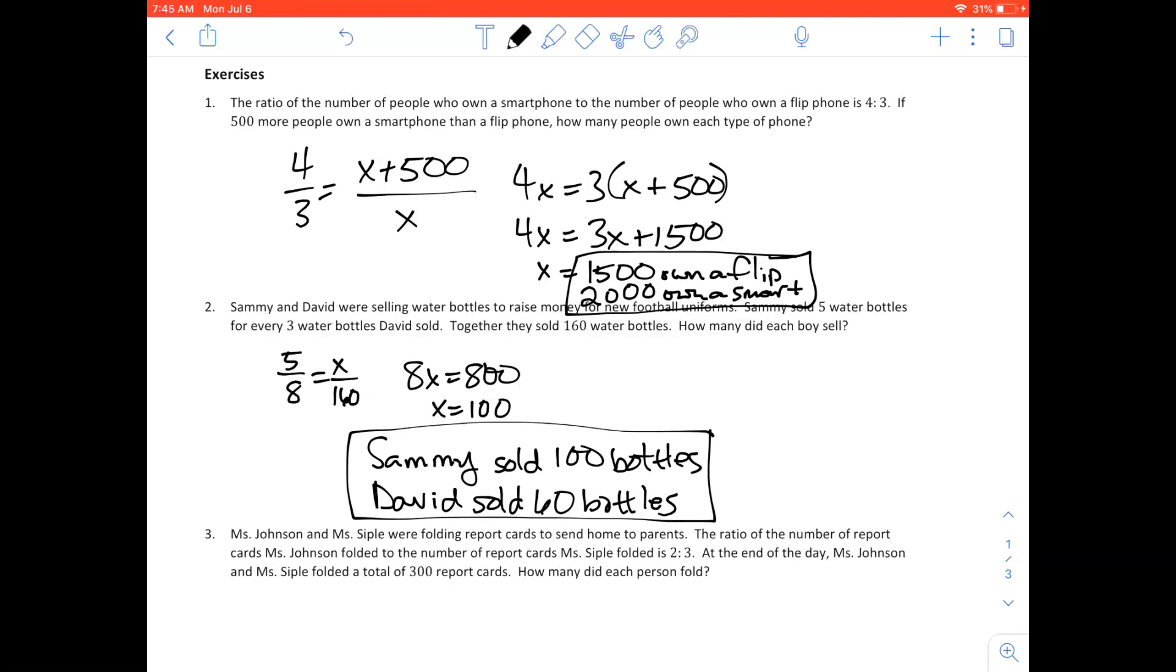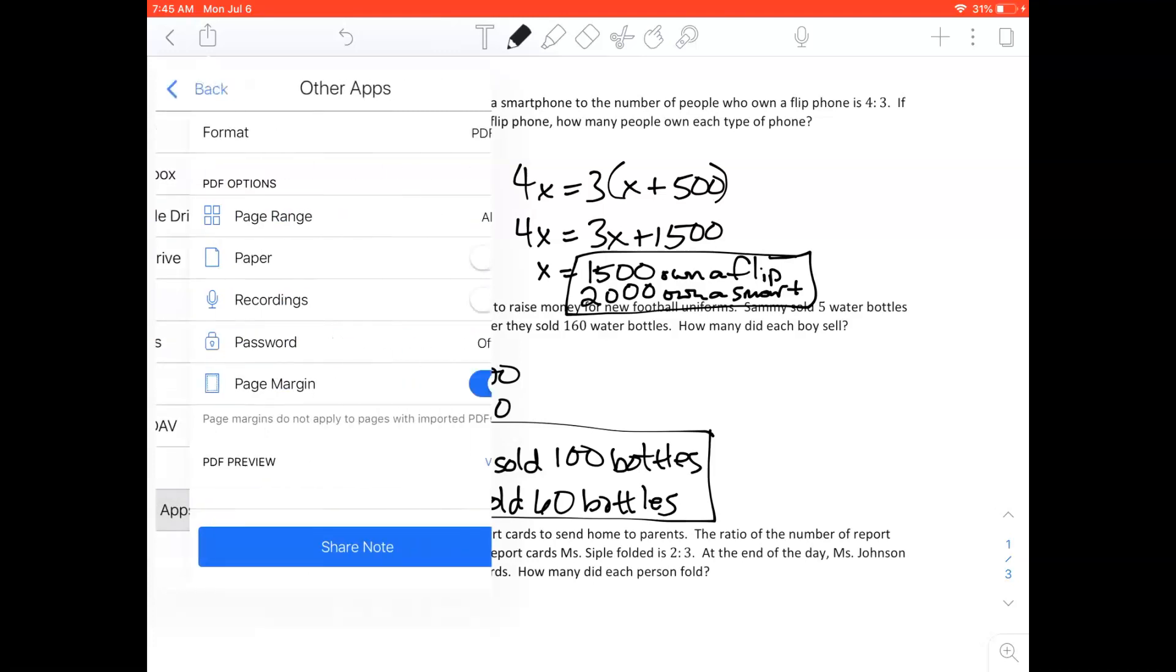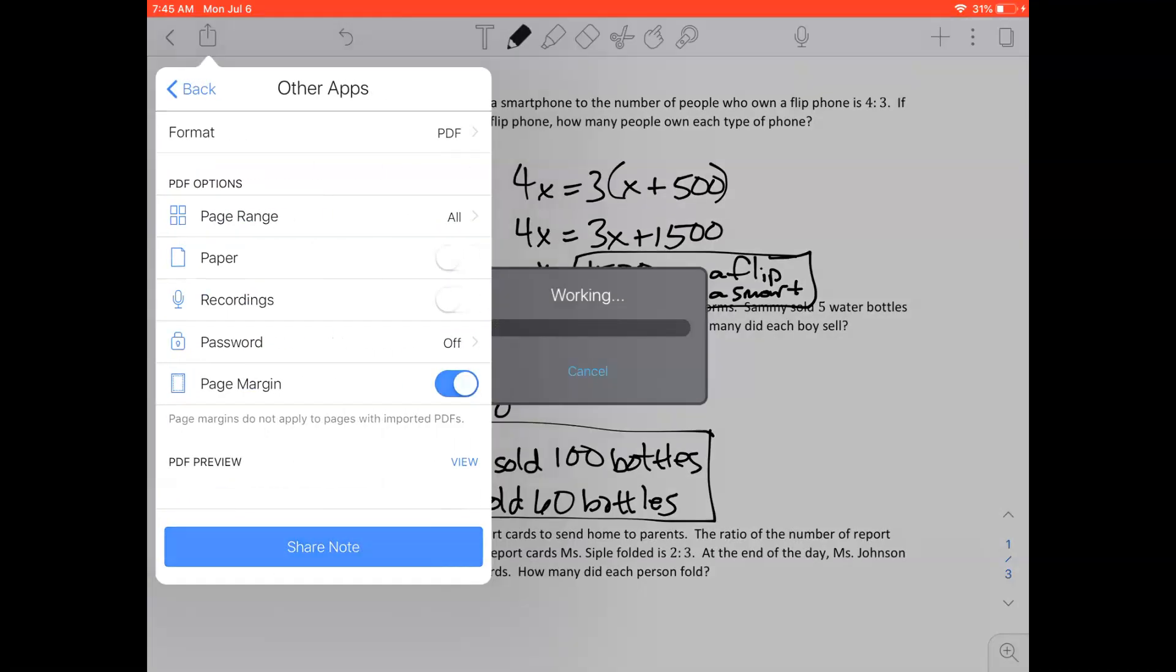I've got my work done here on my math assignment and I'm going to start by tapping the share square in the top left corner. Then I'll tap other apps here at the bottom and then the blue share note button. This little window appears and I'm able to tap submit assignment that's right under the Canvas Sunburst.